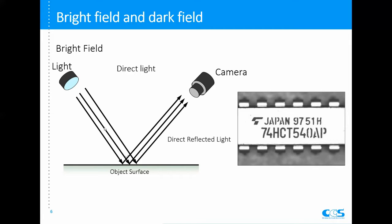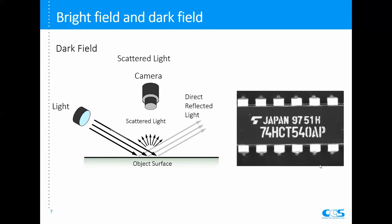If we keep the same sample and light source but move the camera to a different location, we get a totally different image. The light comes out and on the flat surface there is a direct reflection, but this reflected light is not going into the camera, so the whole background is dark. Only where there is a product code — because the surface is very rough — there is scattering diffuse reflection, and this light goes into the camera and becomes bright. Because the direct reflection light won't go into the camera, it shows dark — we call this dark field.